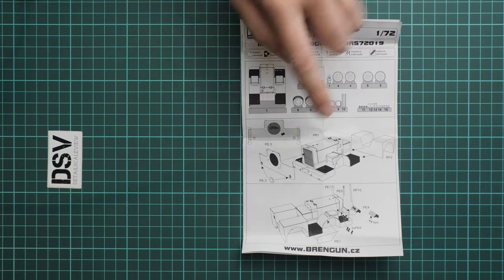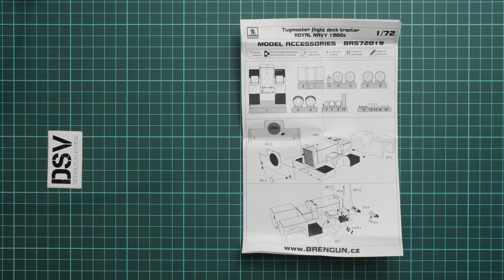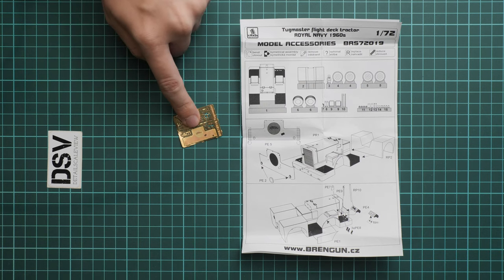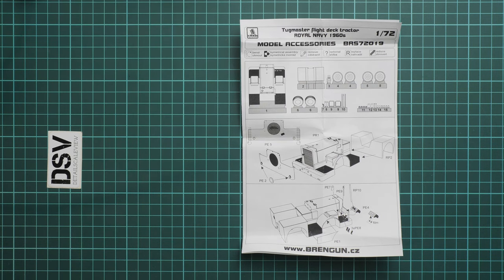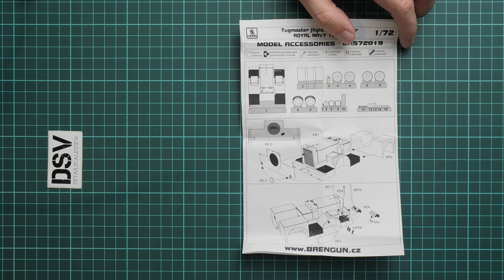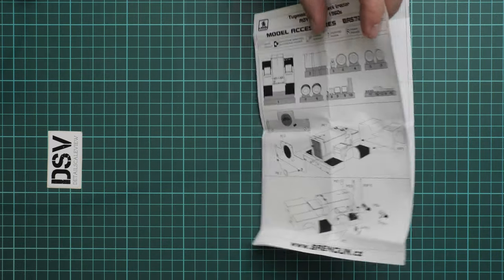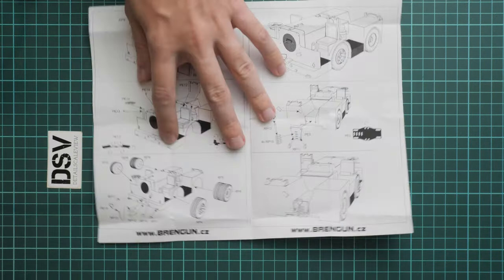And straight away we start with the PE part, as you can see it will be applied on the front side. Next we go on with various interior detailings, again a lot of PE parts employed, so keep in mind that you might need sharp tweezers in order to get these parts into the right spot.